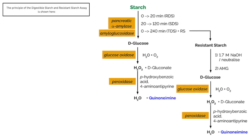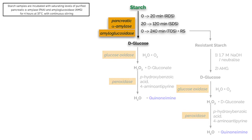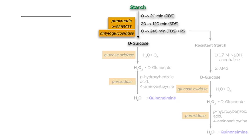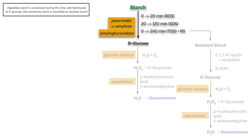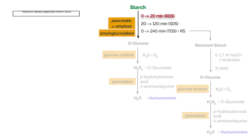The principle of the digestible starch and resistant starch assay is shown in this figure. Starch samples are incubated with saturating levels of purified pancreatic alpha-amylase and amyloglucosidase for four hours at 37 degrees Celsius with continuous stirring. Digestible starch is solubilized during this time and hydrolyzed to D-glucose. Any remaining starch is classified as resistant starch.